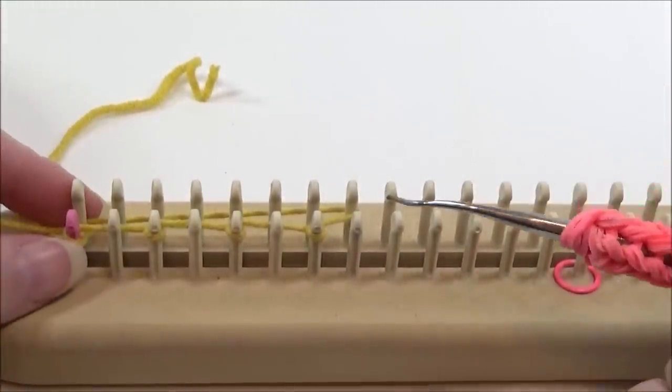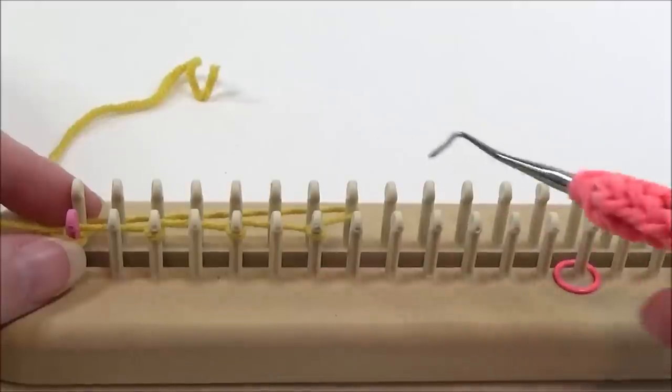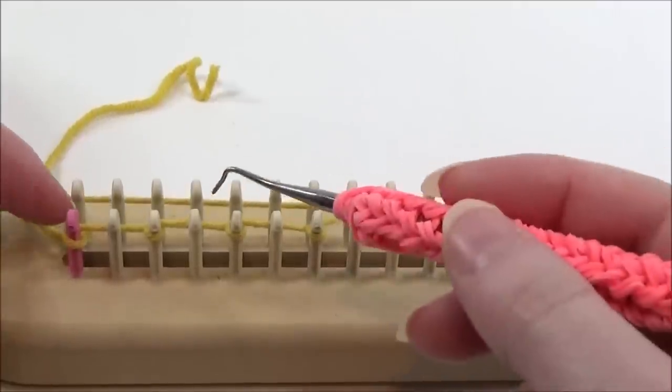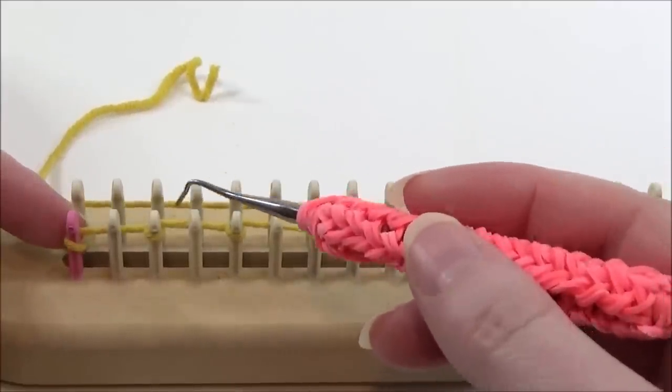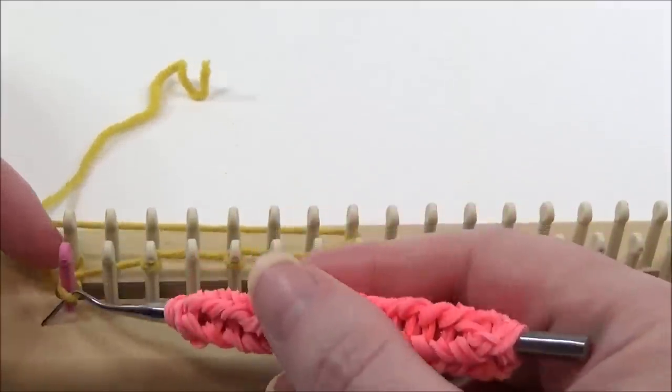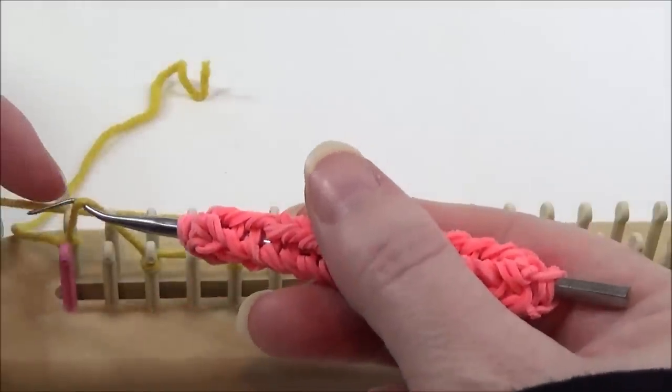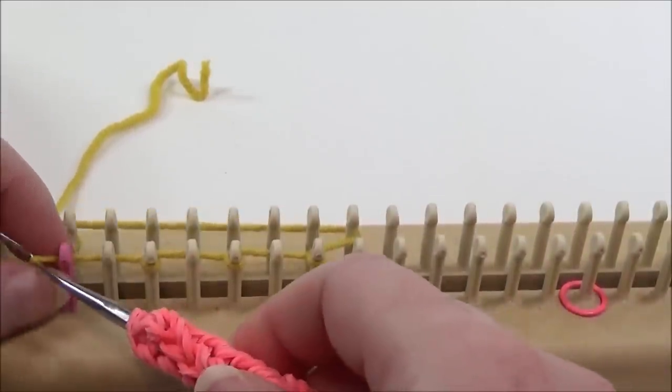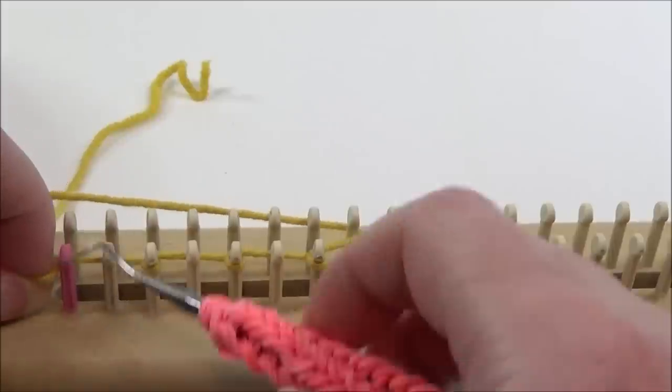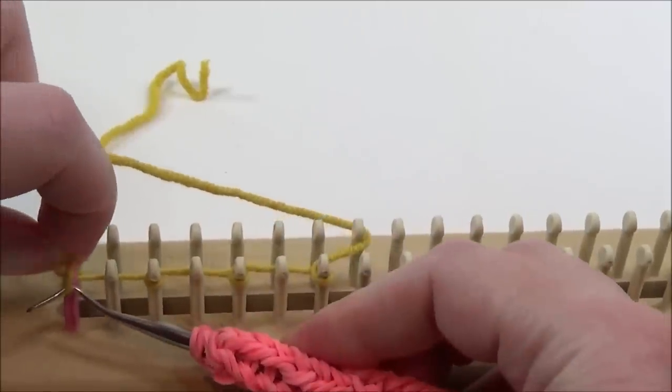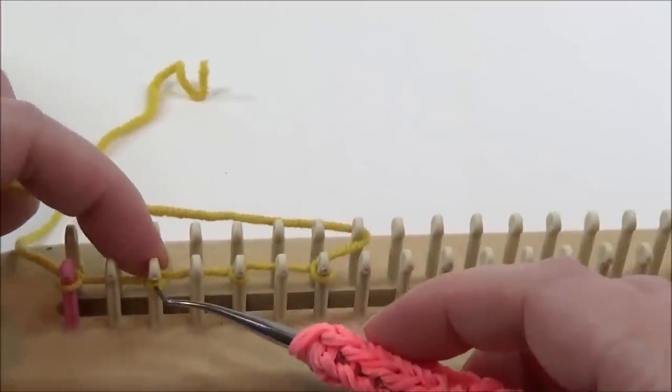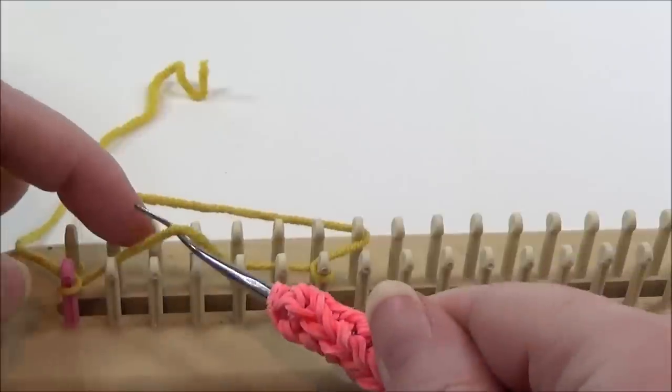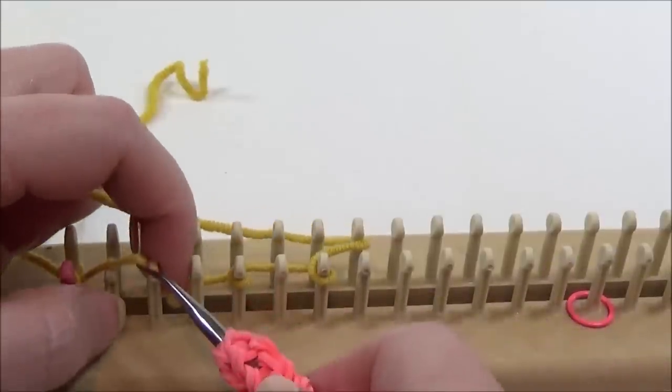Because we're going to be working in a flat panel and not going in a circle, we want to do a reverse e-wrap on these pegs, which means we make that twist go in the opposite direction. We can e-wrap the pegs first, then go back and untwist them and twist them the other direction.